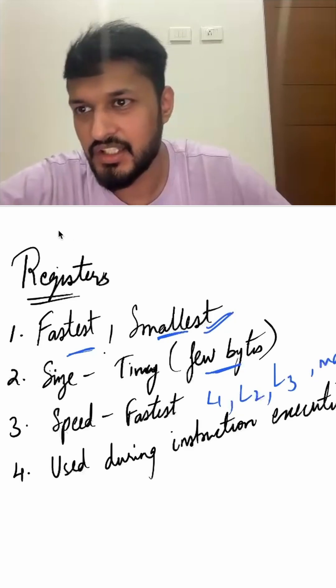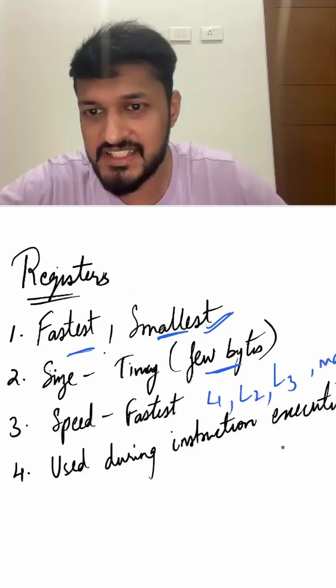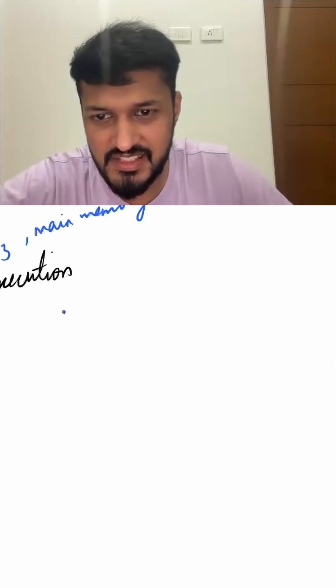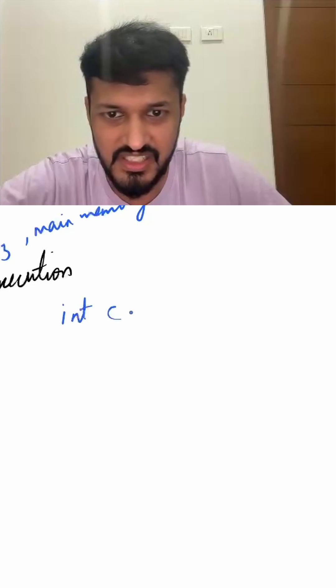And as well as main memory. They are used to hold the data that the CPU is actively working upon during instruction execution. For example, consider the CPU has to execute an instruction: int c = a + b.